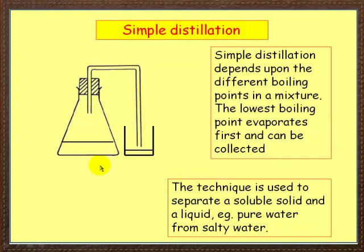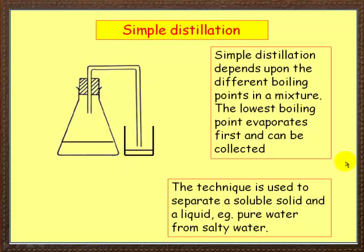The second technique is simple distillation. Here we've got a conical flask, this is called a delivery tube here, and a little beaker here. Now simple distillation depends upon the different boiling points of the mixture. The lowest boiling point evaporates first and can be collected. The technique is used to separate a soluble solid and a liquid — for example, pure water from salty water. You would heat it up to the boiling point of water and collect pure water over here.